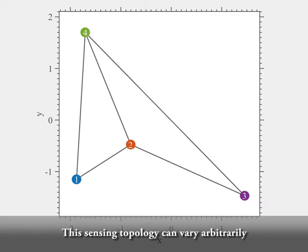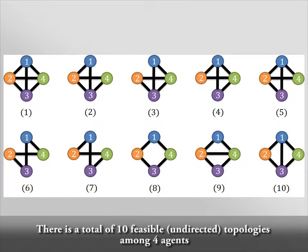This sensing topology can vary arbitrarily. There is a total of 10 feasible undirected topologies among four agents.